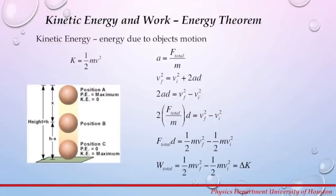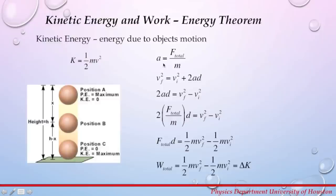According to the work-energy theorem, the total work done on the system is equal to the change in kinetic energy. We will use an example of an object falling through air to derive the work-energy theorem. The two forces acting on the object are gravity and the average force of air resistance. The total force gives it a constant downward acceleration of magnitude a = F_total / m. Suppose the initial speed of the object is v_i, and after falling a distance d, its speed increases to v_f.